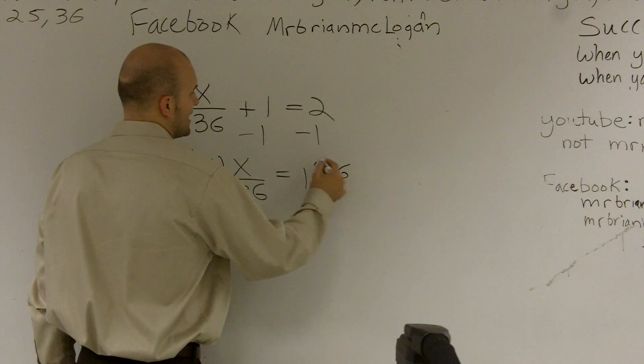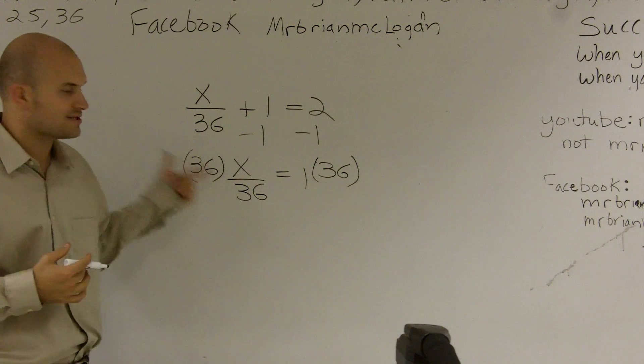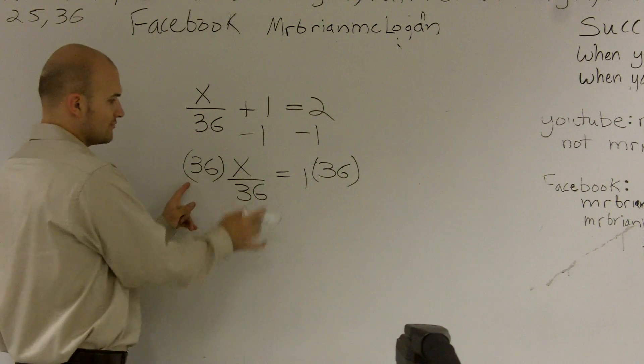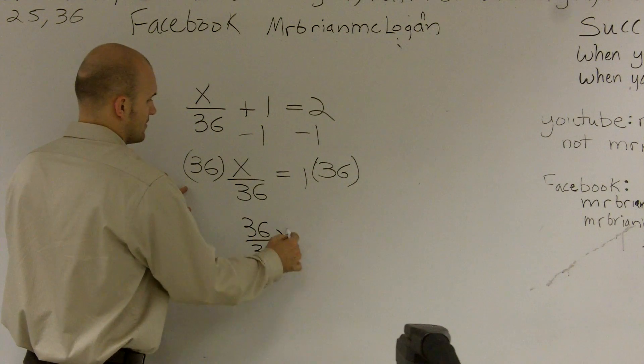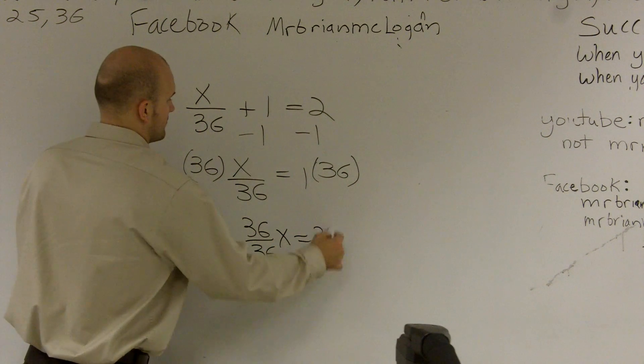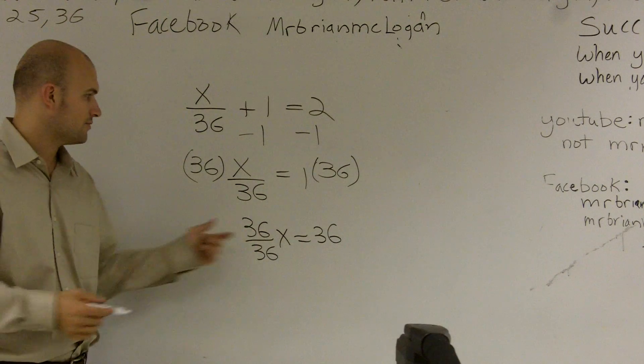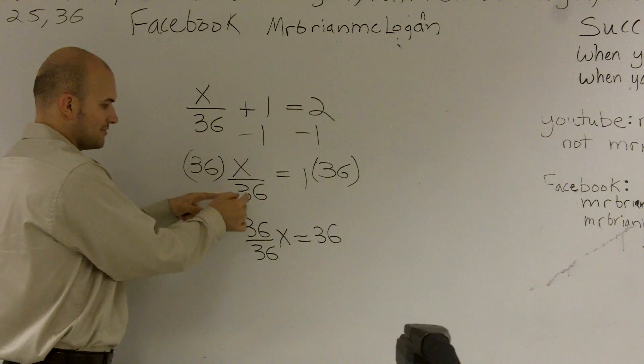Now, a lot of students get mixed up with this because they don't understand how this cancels out. I can rewrite this like this. Okay? All I'm doing is I'm just changing how, you know, 36 times x divided by 36.